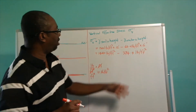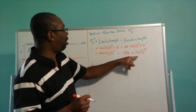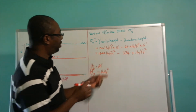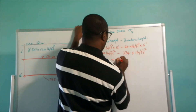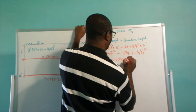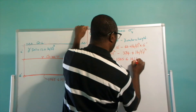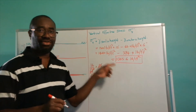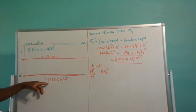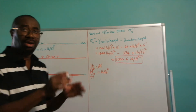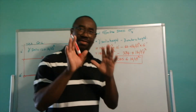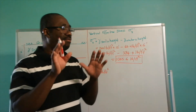If we subtract 374.4 pounds per feet square from 1440 pounds per feet square, the answer gives us 1065.6 pounds per feet square. So the maximum vertical effective stress of this soil layer is 1065.6 pounds per feet square at a depth of 12 feet. That is the calculation for the vertical effective stress.